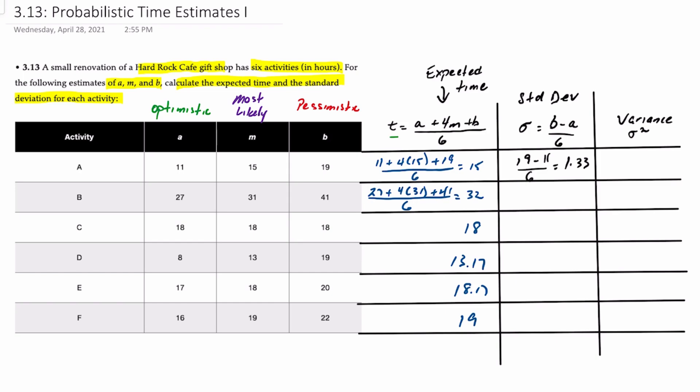If we do the same for activity B, we'll take 41 minus 27 over 6, 2.33 hours.